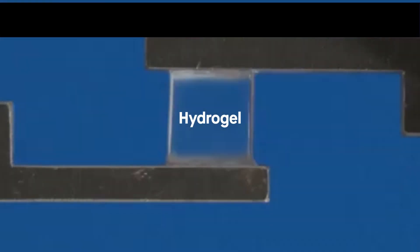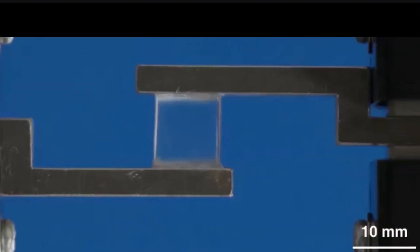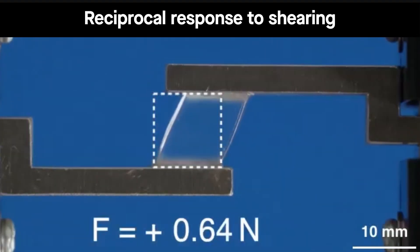The material that makes this motion possible is known as a hydrogel, a soft polymer-based material made mostly of water. A pure hydrogel, like the one shown here, is a reciprocal material.